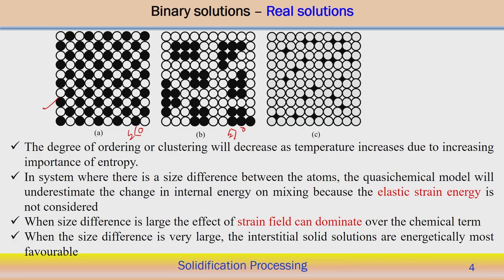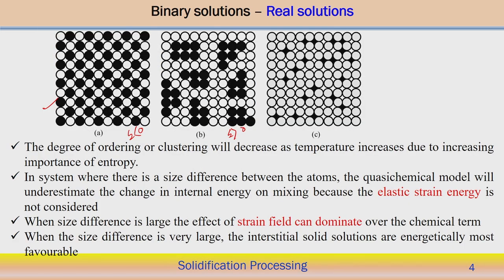Now we can see that the degree of ordering or clustering will decrease as temperature increases. Clustering decreases once the temperature increases, because at high temperature the randomness also increases and the influence of entropy will be there. The entropy of mixing is more important when temperature is raised as compared to low temperature. The entropy of mixing will play a role in estimating the configuration of the atoms.